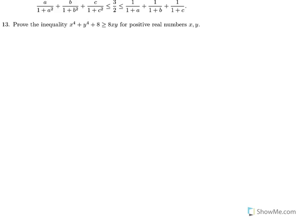Exercise 13 is pretty simple using AM-GM inequality directly. As you can see, we have x to the power of 4 and y to the power of 4. We can apply AM-GM, but since we are not given positivity, it is better to work with perfect squares or separate cases. If x and y are positive we apply AM-GM directly. If they are not positive, x⁴ and y⁴ are non-negative and we add 8, so the left-hand side is positive.